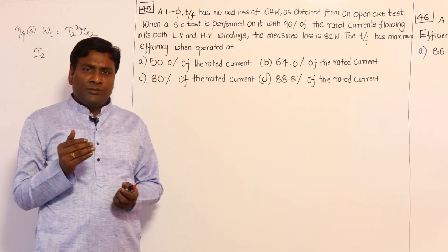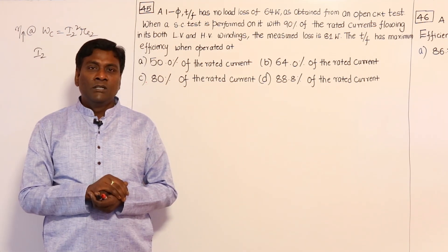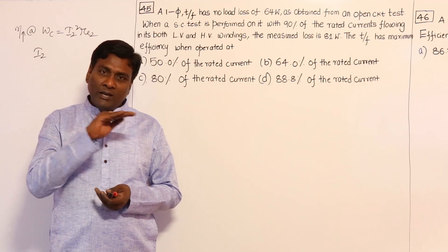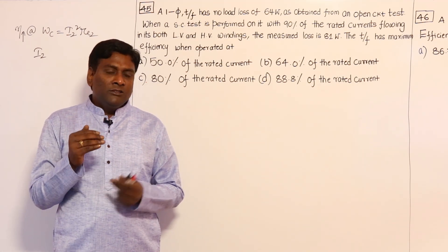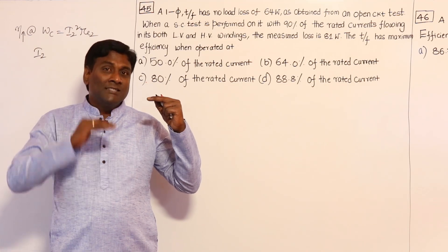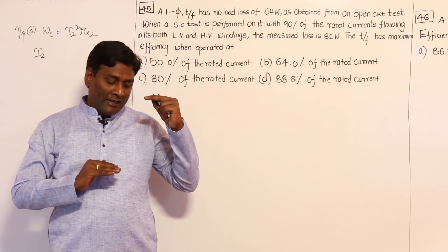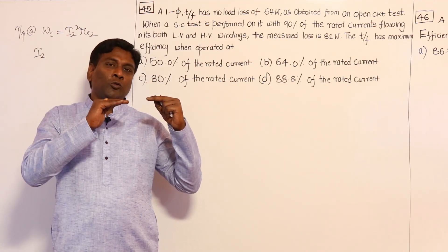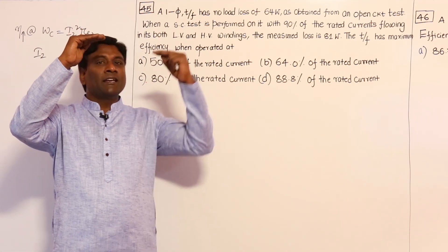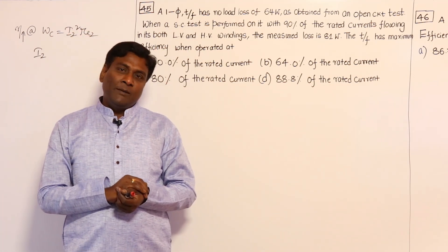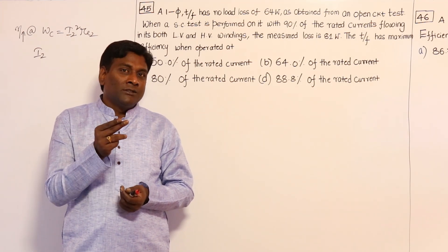Variable loss will vary depending upon the loading, but core loss will always be constant. So copper losses will vary, while core losses remain constant. Maximum efficiency will occur when copper loss equals core loss. But since full load copper loss is fixed here, core loss cannot be changed. So at maximum efficiency, losses will be 2 times core losses — not 2 times copper losses.